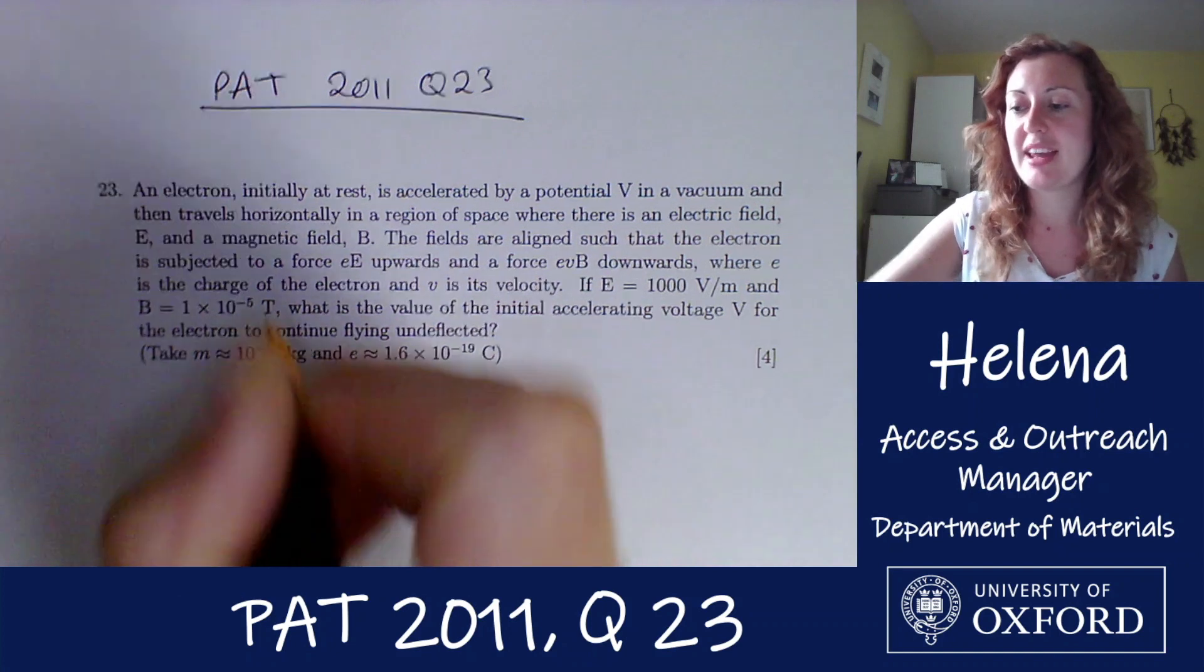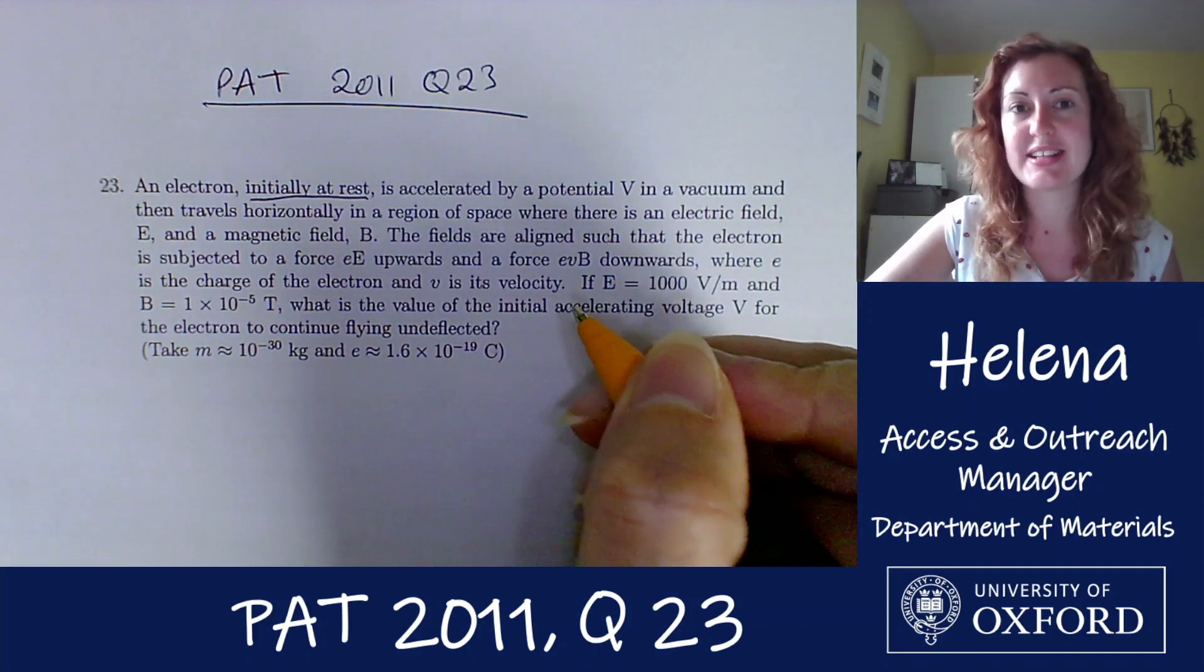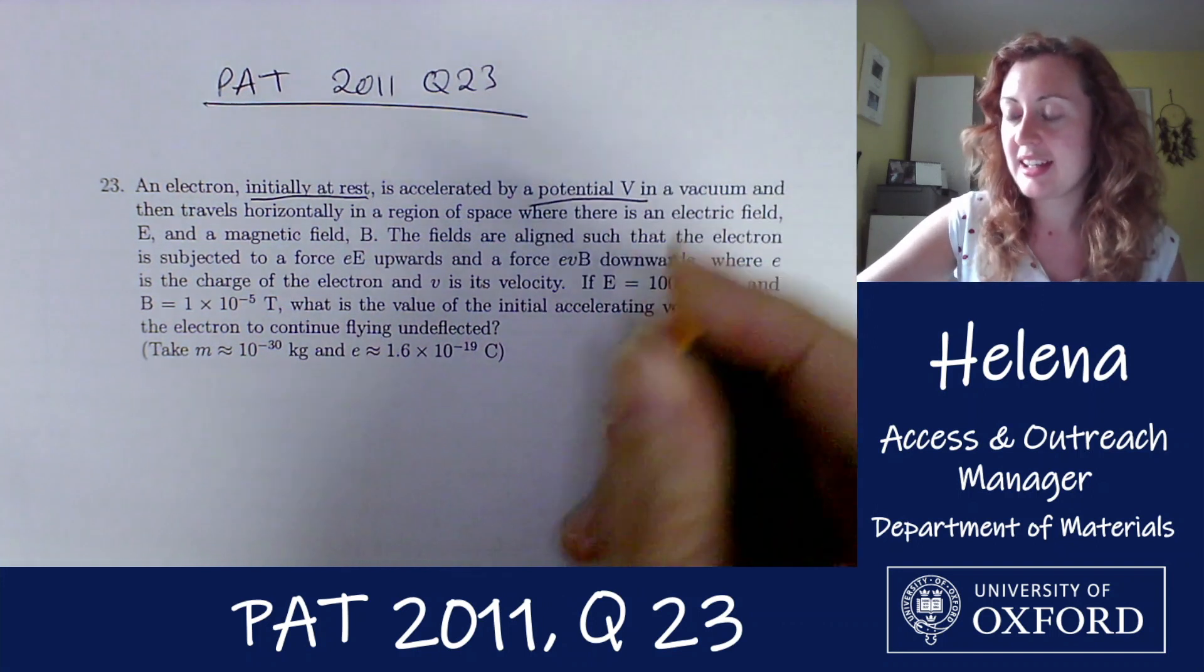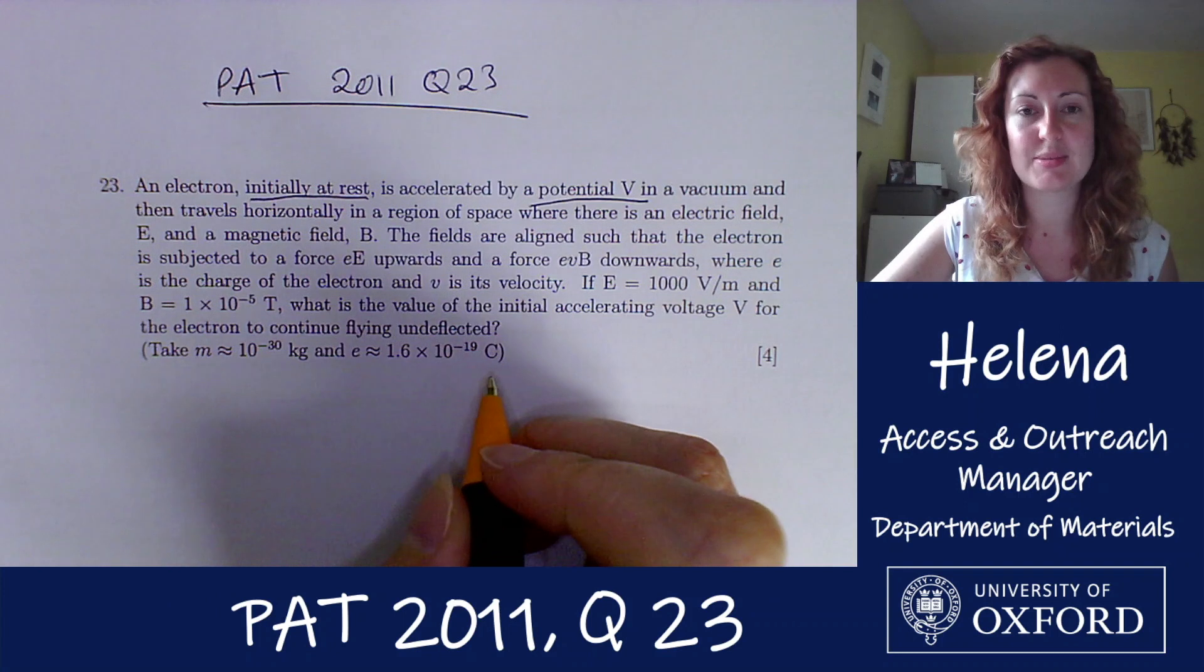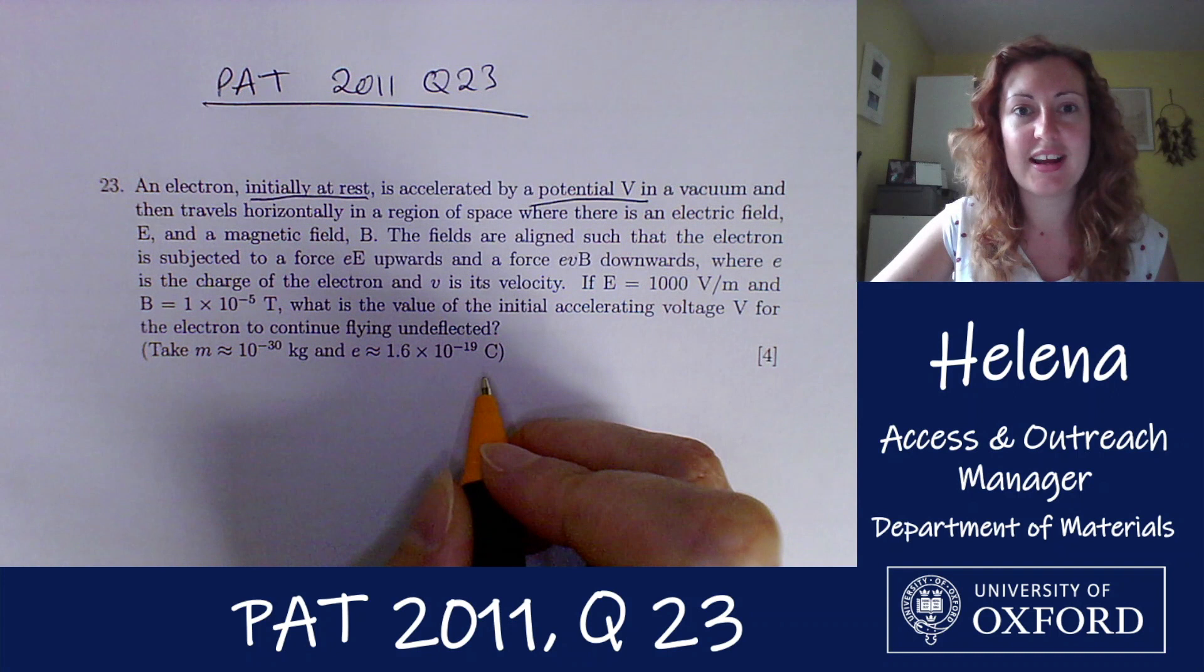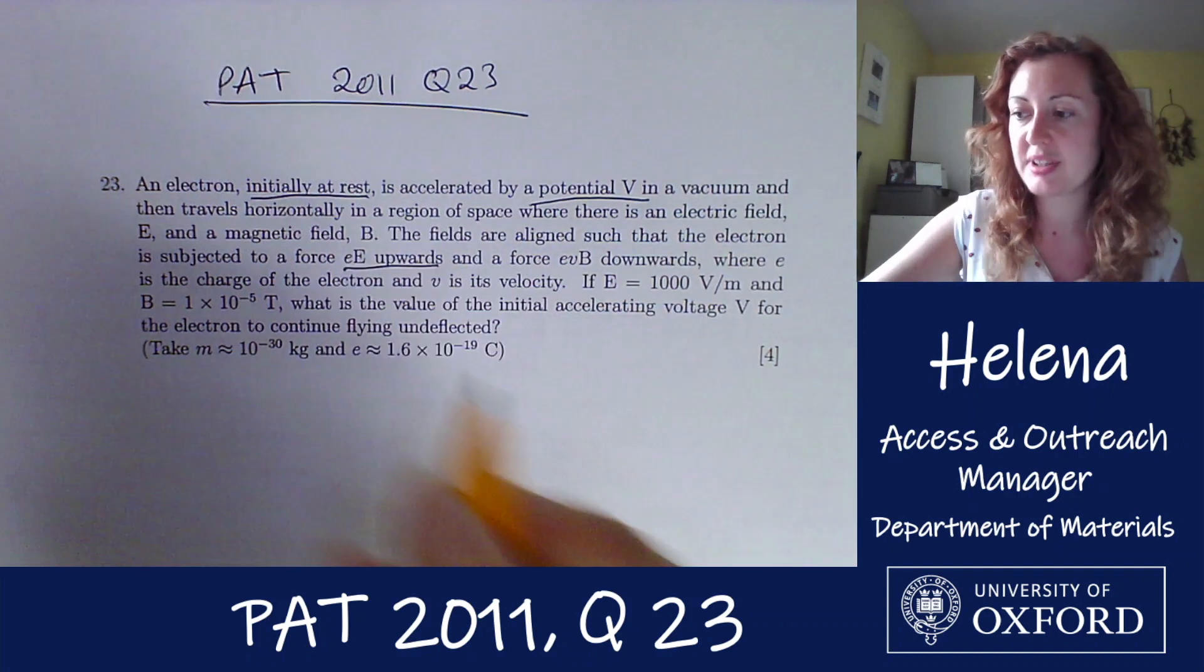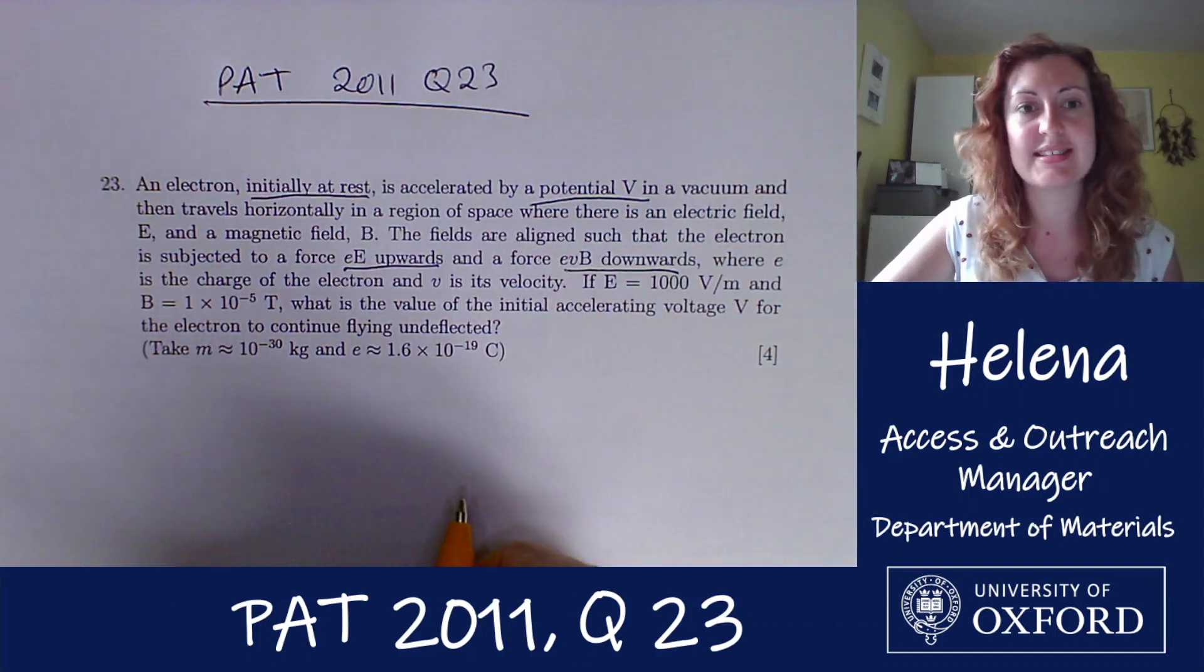An electron initially at rest is accelerated by a potential V in a vacuum and then travels horizontally in a region of space where there's an electric field E and a magnetic field B. The fields are aligned such that the electron is subjected to a force eE upwards and a force evB downwards, where e is the charge of the electron and v is its velocity.